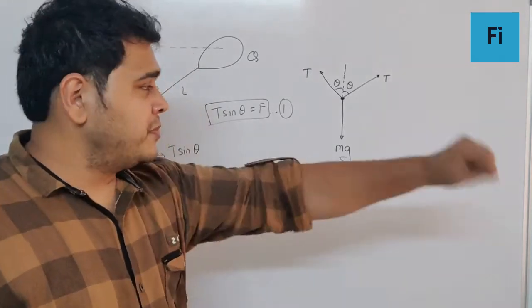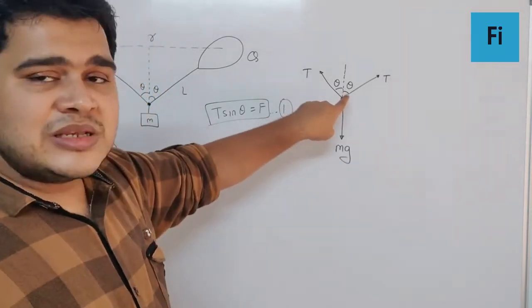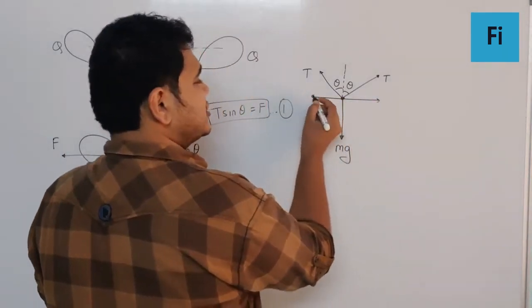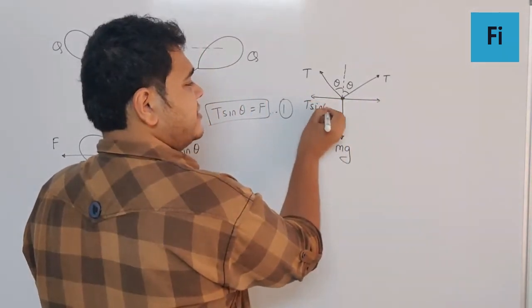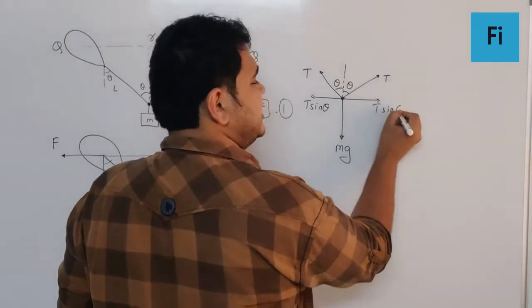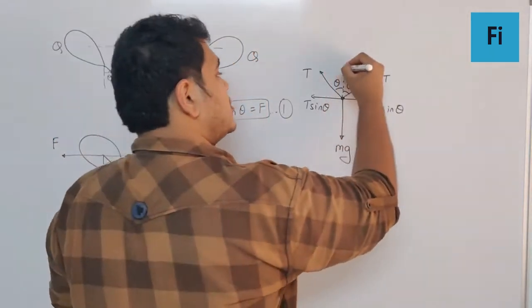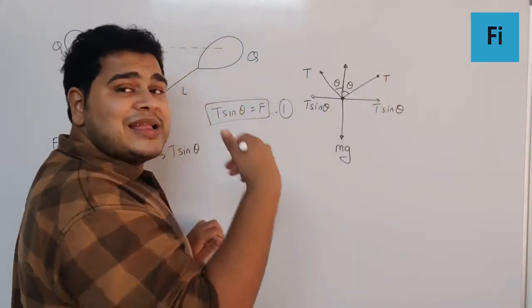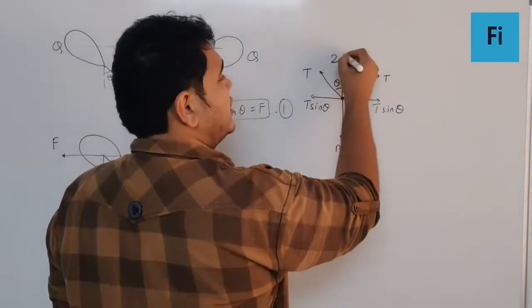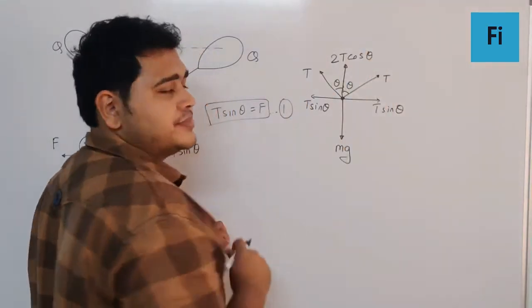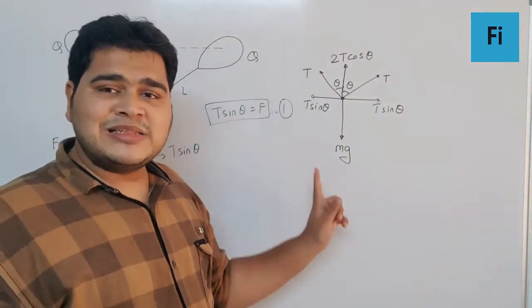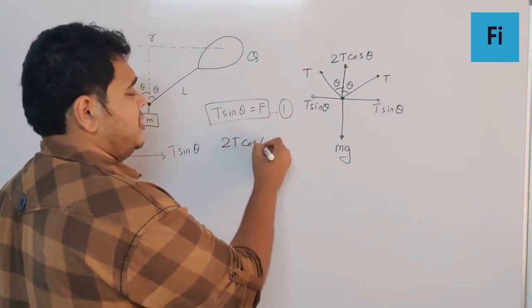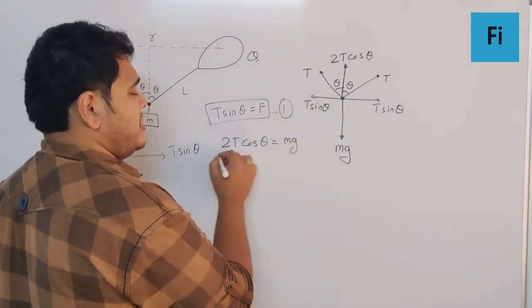If I resolve this tension, on the horizontal side we have T sine theta which will cancel each other. On the vertical side the cos theta components get added, so we get 2T cos theta. The second equation is 2T cos theta equals mg.